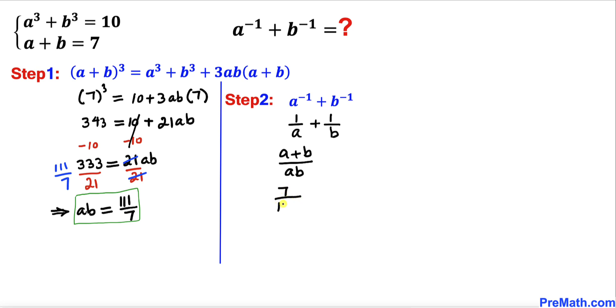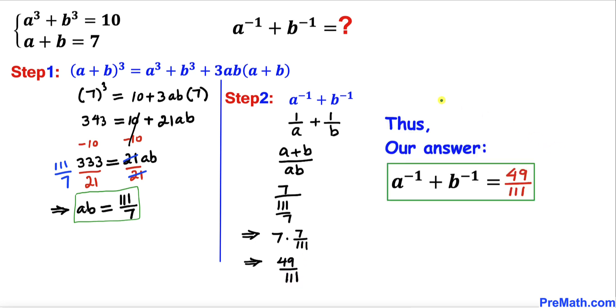In this next step, I am going to flip this denominator over. So this could be written as 7 × 7/111. When we multiply, 7 × 7 is going to give us 49 divided by 111.